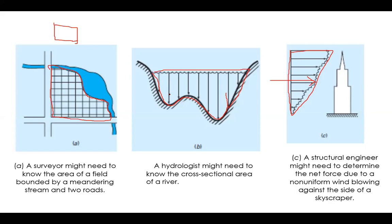A student suggests double integration. That is correct — you can use double integration by considering limits along x and y. But to perform double integration, you must have an equation for the boundary curve. The surveyor only gets x-y coordinate points of the boundary — how do you obtain the equation from those points?